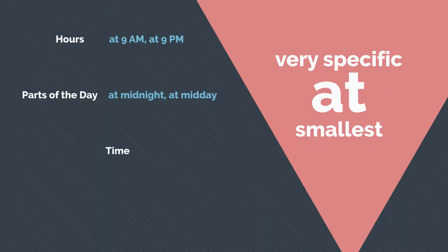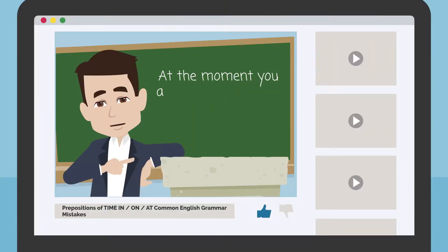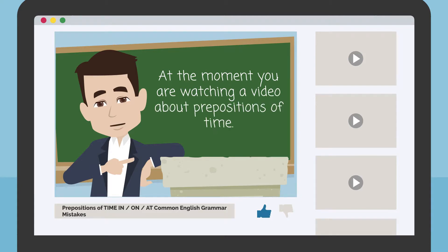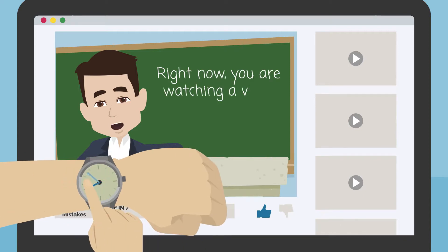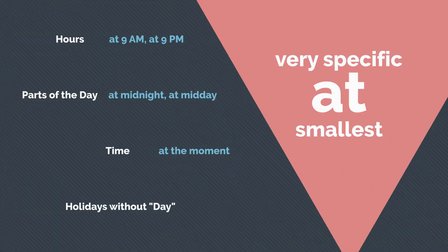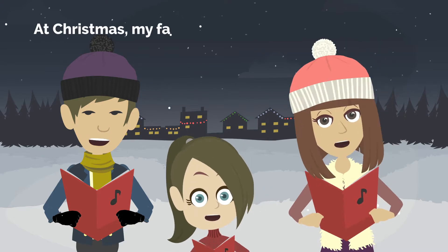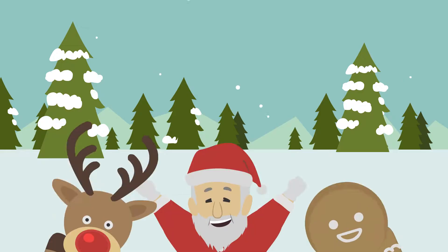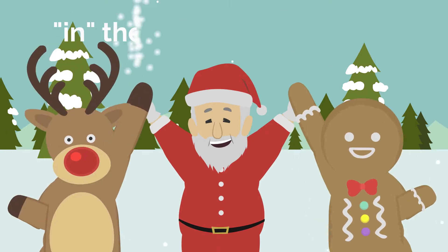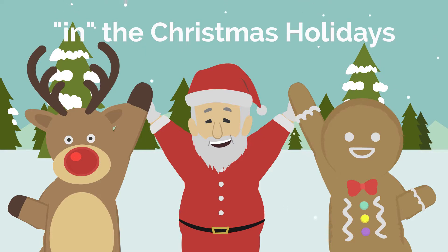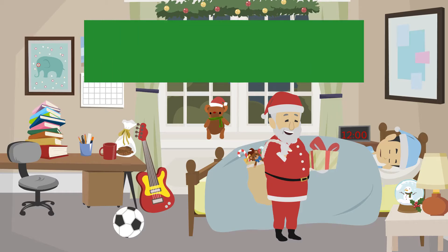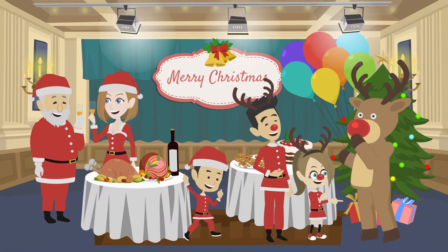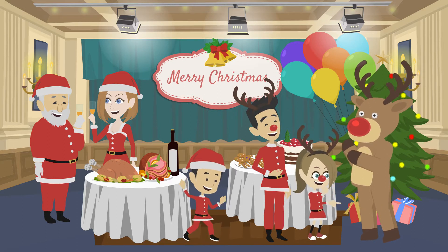At can be used with time expressions such as at the moment. For example, at the moment you are watching a video about prepositions of time — in other words, right now you are watching a video about prepositions of time. It can also be used with holidays without day, such as at Christmas. For example, at Christmas, my family likes to sing Christmas carols. Remember, in the Christmas holiday was the entire season and on Christmas day was specifically December 25th. Now, at Christmas is the specific time you celebrate Christmas — it refers to a particular day.